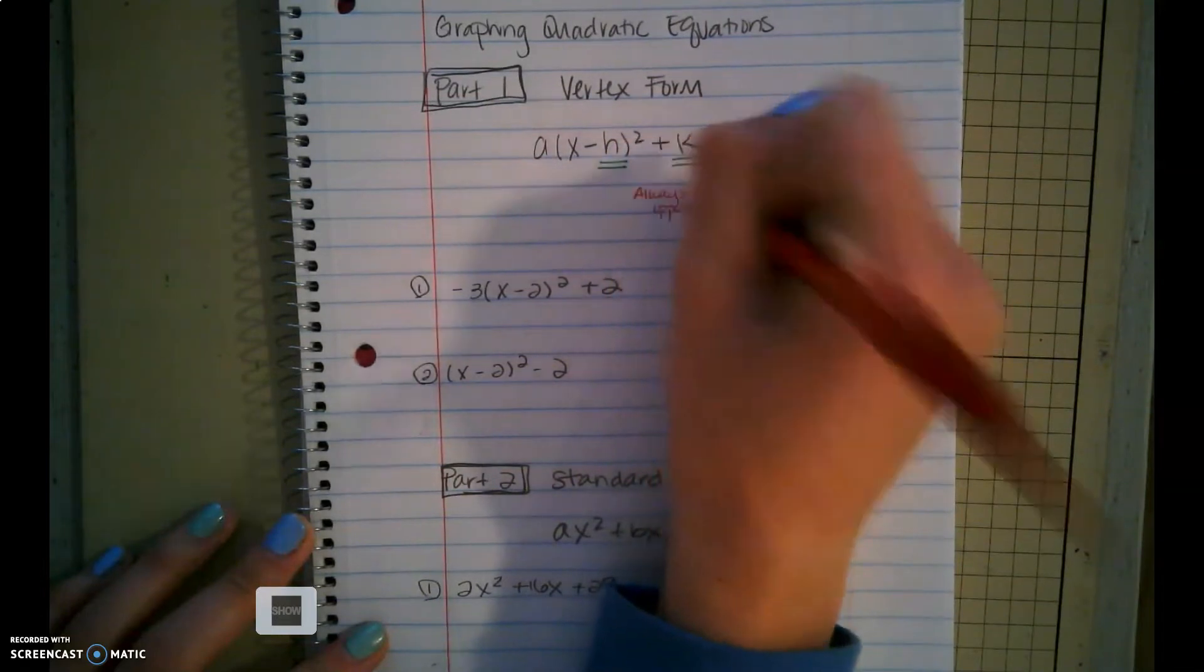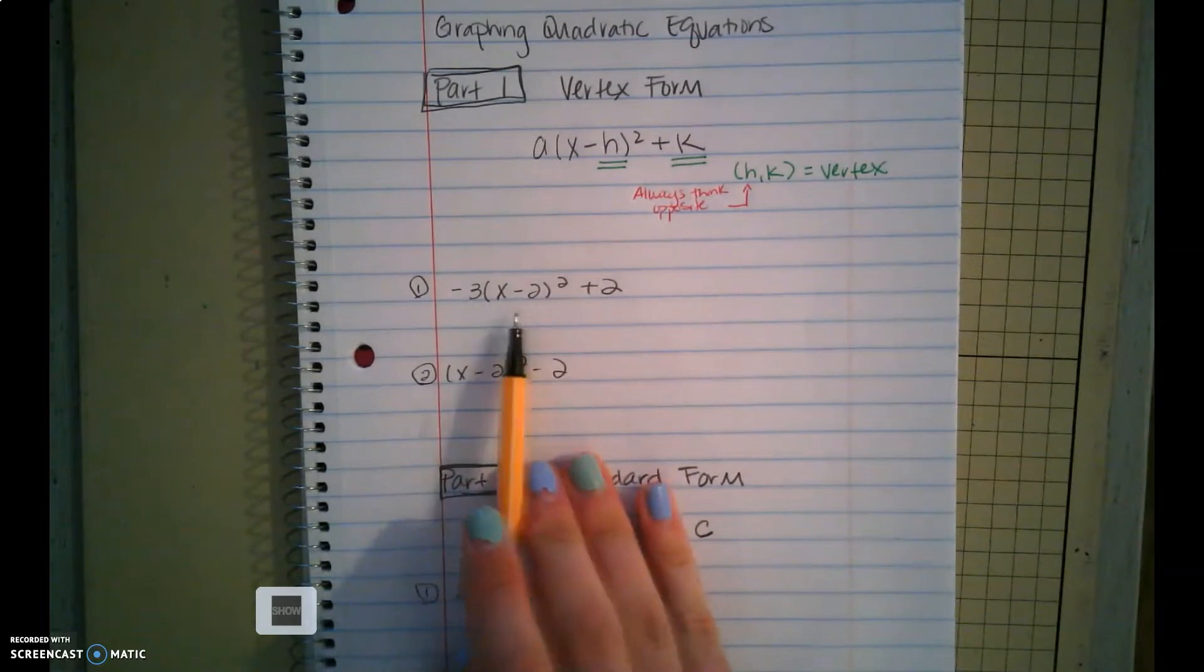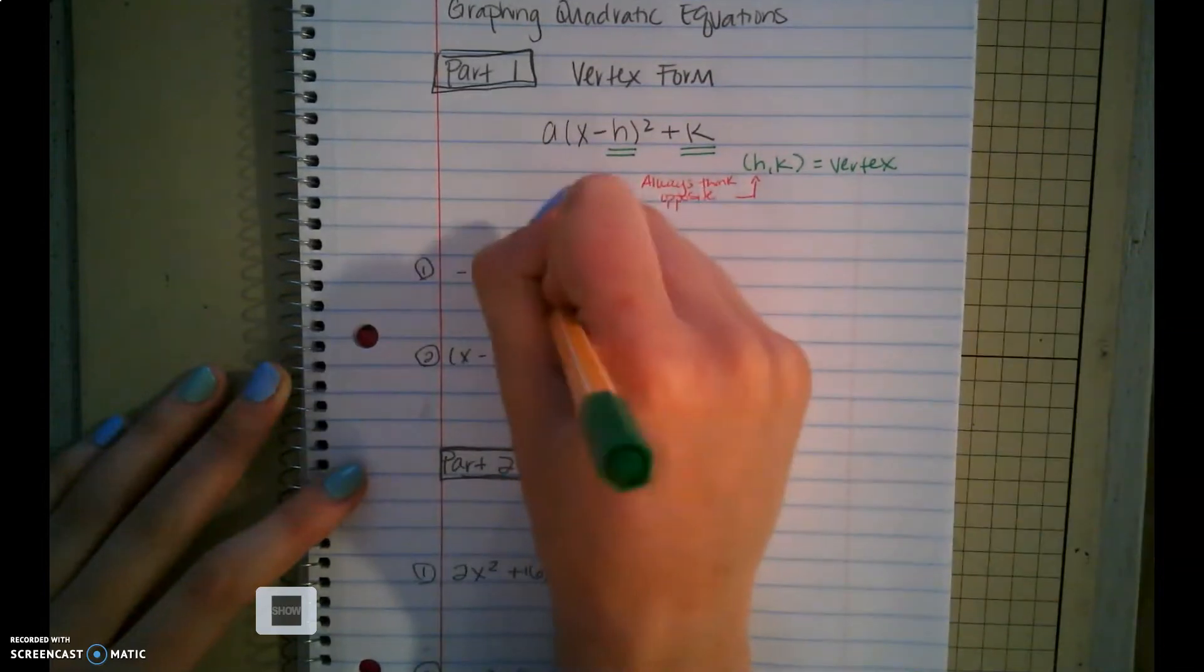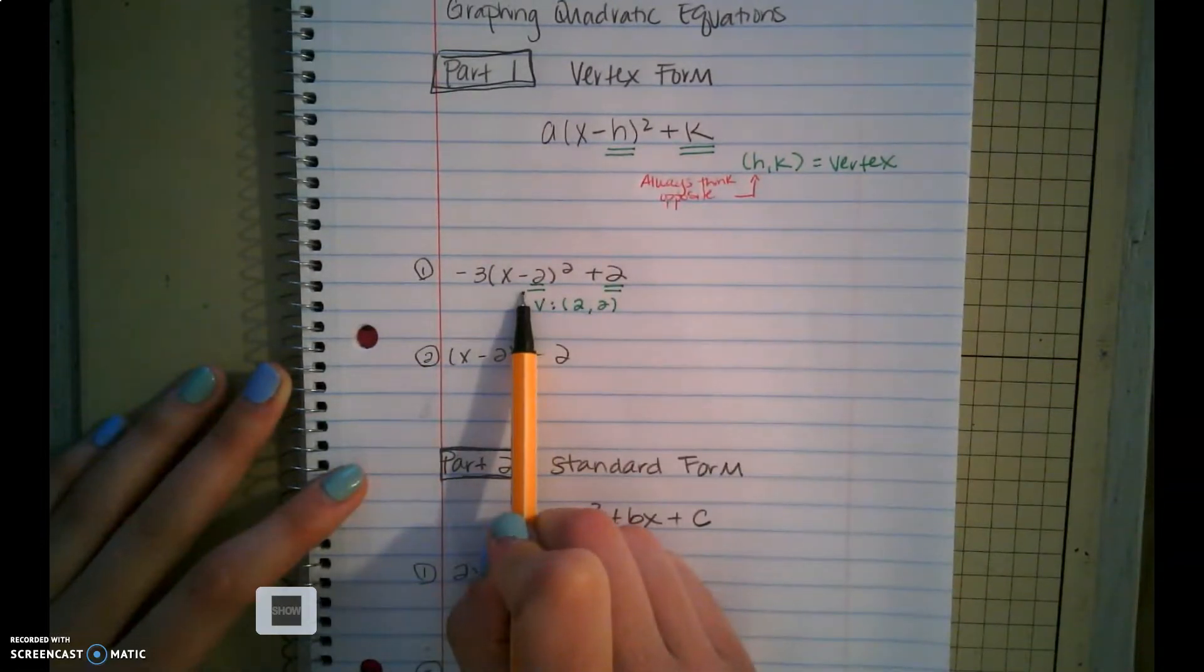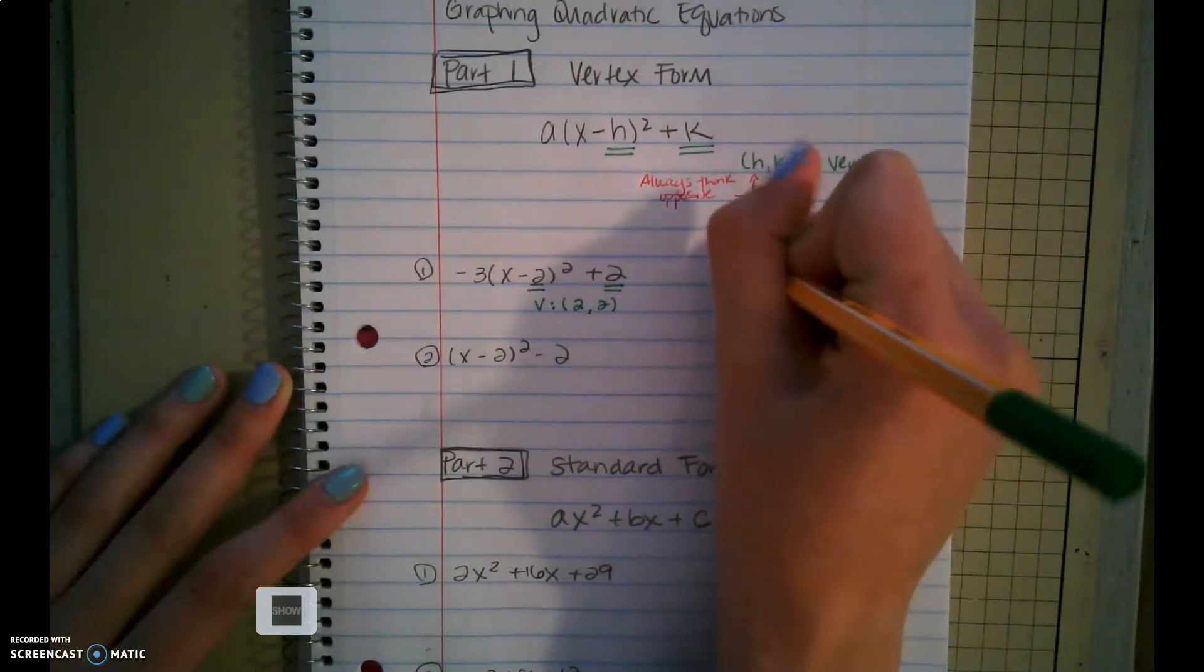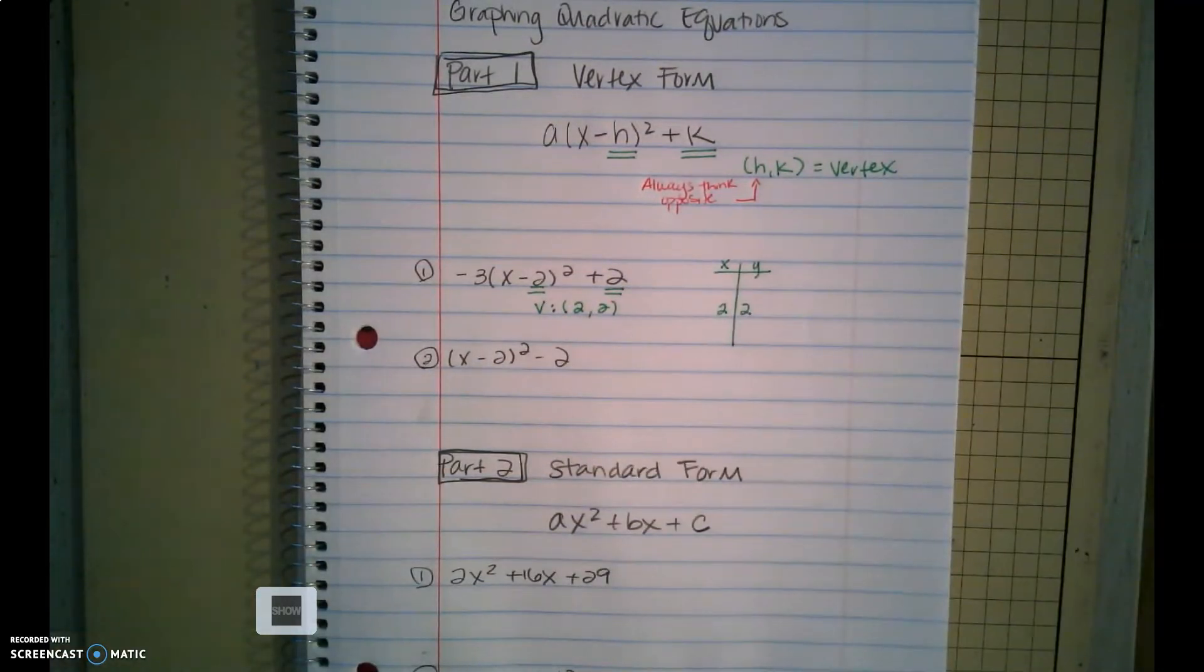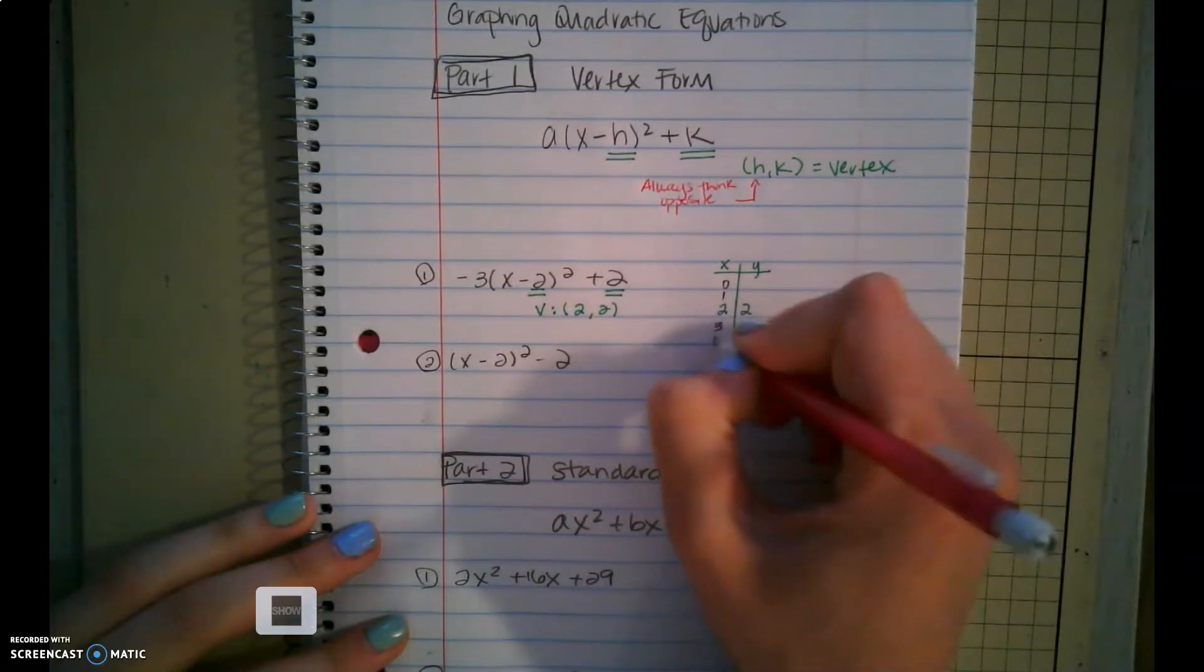Once we know our vertex, we can create a table of values. So in this first equation, we have the vertex here. That vertex is at 2, 2. And remember we always think of the opposite when it comes to H. So I can create a little mini table here. I'm going to put 2, 2 in the middle of my table. That gives us a starting point on what kind of table we want to make. So I'm going to pick 2 points before it, 2 points after it.